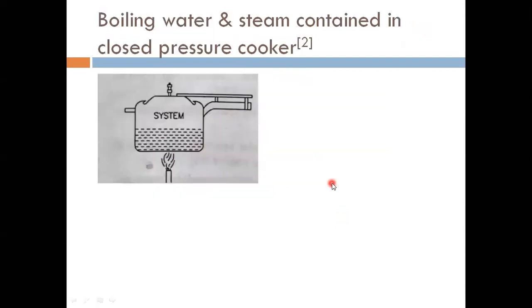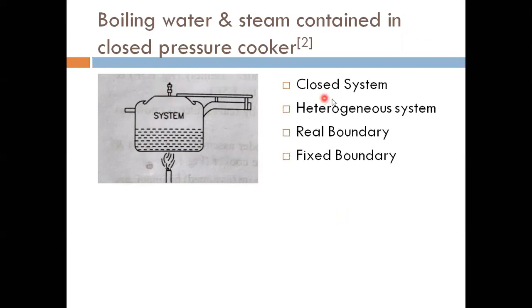Another example is the pressure cooker, where water converts to steam over a burner. When the safety valve is closed, there is no mass transfer, so it is a closed system. When the safety valve opens, steam goes outside, making it an open system at that time. It is a heterogeneous system with two phases — water and steam — with a real boundary and a fixed boundary since its shape and size do not change.